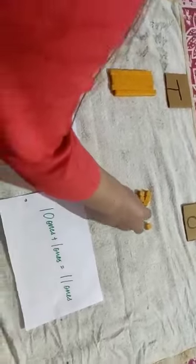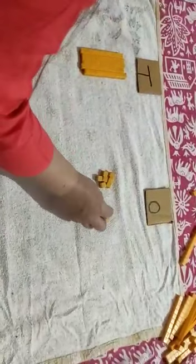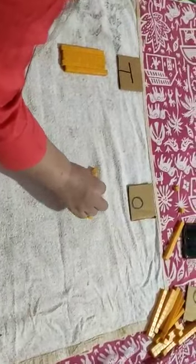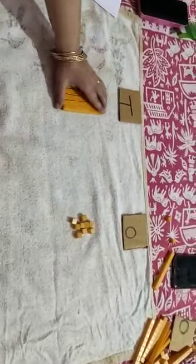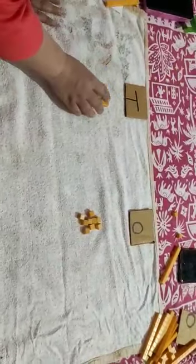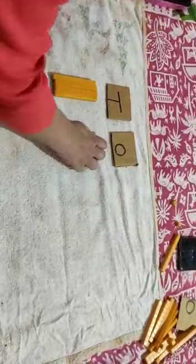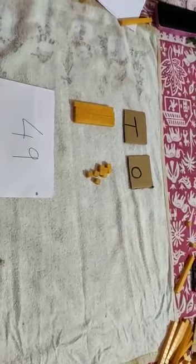Now, can I remove two from here? Yes. I can remove two. Now, I am left with one, two, three, four, five, six, seven, eight, nine. Nine ones. And from ten's place, I need to remove one. So, I am left with how many tens? Four tenths and nine ones. So, answer is forty-nine. So, shopkeeper is left with forty-nine sticks.